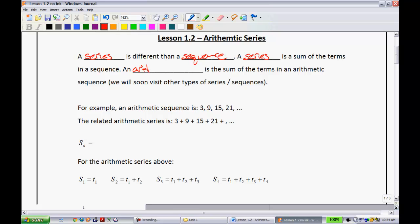A series is a sum of the terms in a sequence. An arithmetic series is the sum of the terms in an arithmetic sequence. We will soon visit other types of series or sequences, mainly geometric. For example here, what I have highlighted, 3, 9, 15, 21.